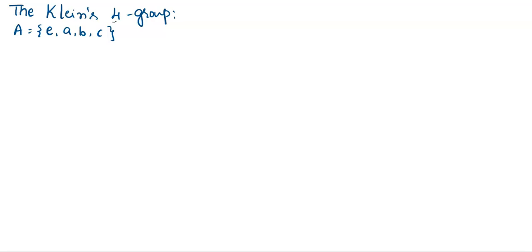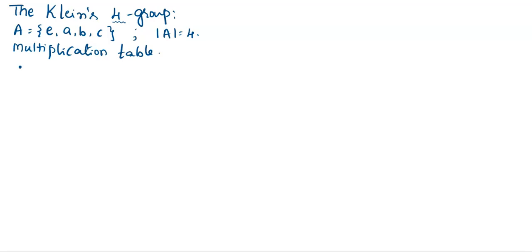According to the Klein Four-Group, we have the order of A. Let me consider a binary operation to describe the table. In this binary operation, we are going to consider a multiplication table. The operator is dot. Let me take all the elements given in set A — E, A, B, C — and the same in column-wise: E, A, B, C.